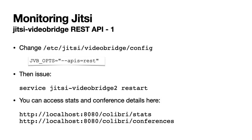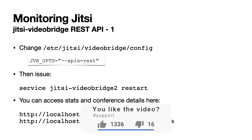If you want to monitor your Jitsi instance, you can have a look at the log files jicofo.log and jvb.log in /var/log/jitsi, but unfortunately it's not that easy to get a hold of the number of active meeting rooms or the number of participants in those rooms.